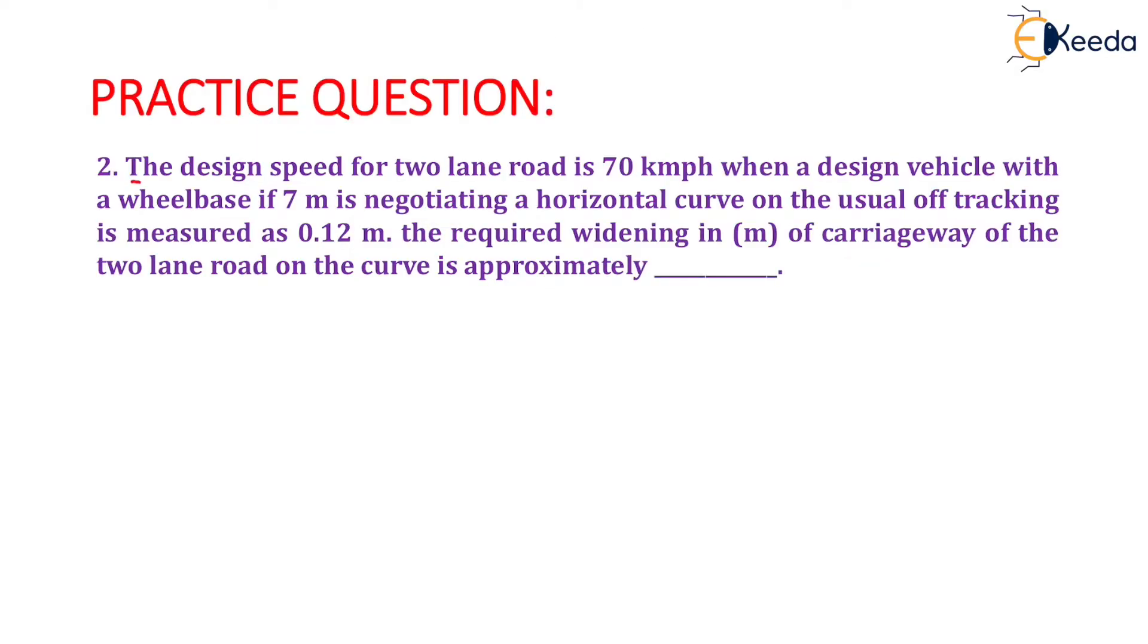The question is given as: the design speed for a two-lane road is 70 kilometers per hour when a design vehicle with a wheelbase of 7 meters is negotiating a horizontal curve. The usual off-tracking is measured as 0.12 meters. That will be the value of mechanical widening. The required widening in meters of carriageway of the two-lane road on the curve is approximately what?